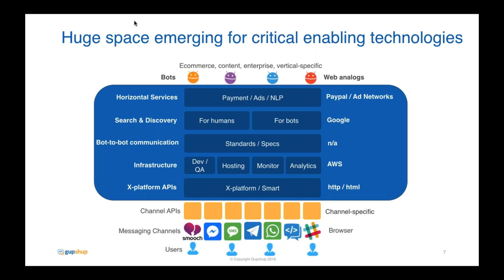Above that, you have a layer of cross-platform APIs that you can use for pretty much any chatbot. For example, a weather chatbot would need an open weather API; a chatbot to check soccer scores might need a sports API. Any cross-platform API depends on what your bot does. The layer above that is the infrastructure layer — your development and QA environments, hosting, chatbot monitoring, and analytics.